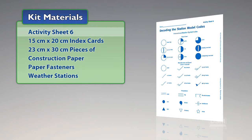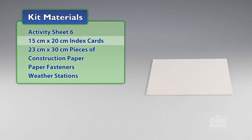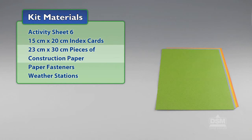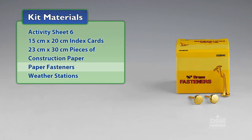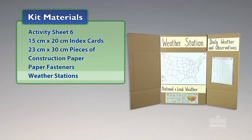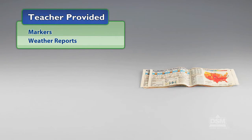You will need the following materials from the kit: Activity Sheet 6, 15 cm x 20 cm index cards, 23 cm x 30 cm pieces of construction paper, paper fasteners, and weather stations.